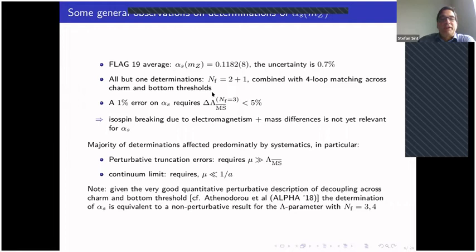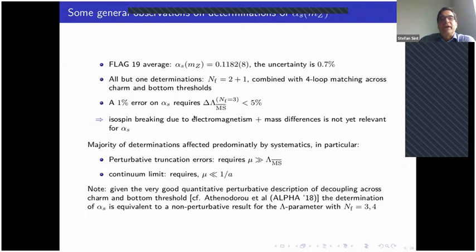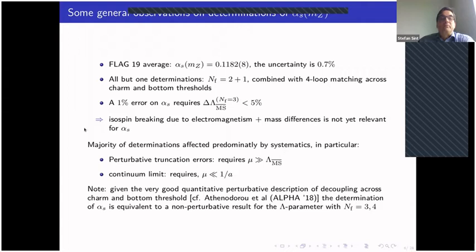Isospin breaking effects due to electromagnetism and mass differences are not really relevant for alpha_s at this level of precision, so they can be safely neglected. The majority of determinations are affected by systematics, in particular perturbative truncation errors, which require that the scale is much larger than the lambda parameter. The continuum limit also requires that the scale is still much smaller than the inverse lattice spacing.